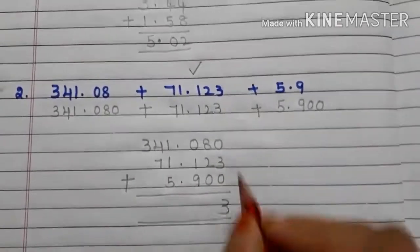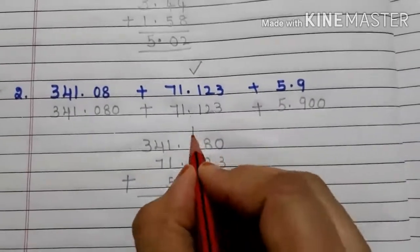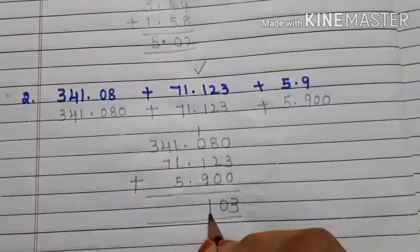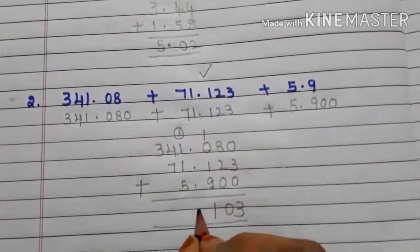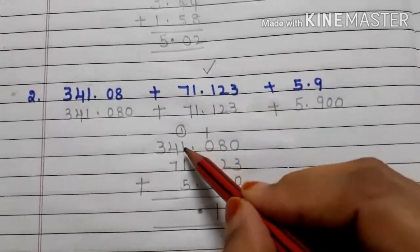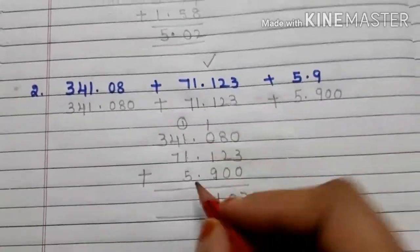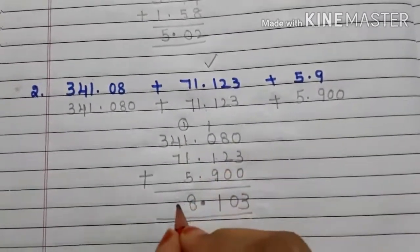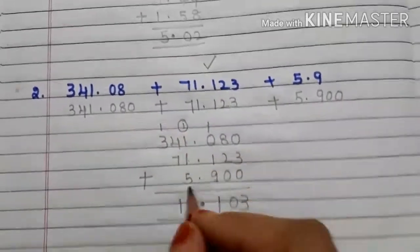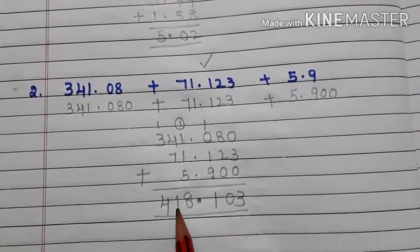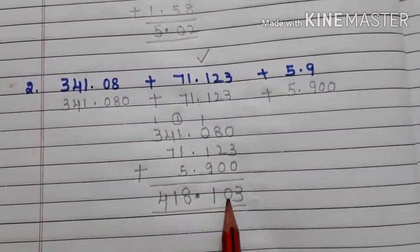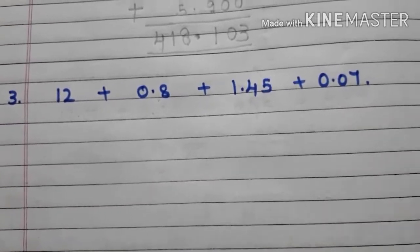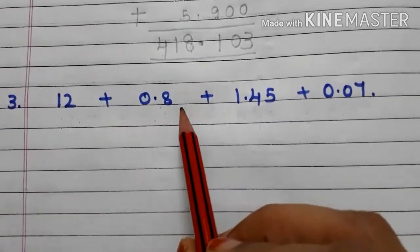Now add: 0 plus 3 plus 0 is 3. 8 plus 2 is 10, write 0 carry 1. 1 plus 1 is 2, 2 plus 9 is 11, write 1 carry 1. Decimal under decimal. 1 plus 1 is 2, 2 plus 1 is 3, 3 plus 5 is 8. 4 plus 7 is 11, write 1 carry 1. 1 plus 3 is 4. So the answer is 418.103.